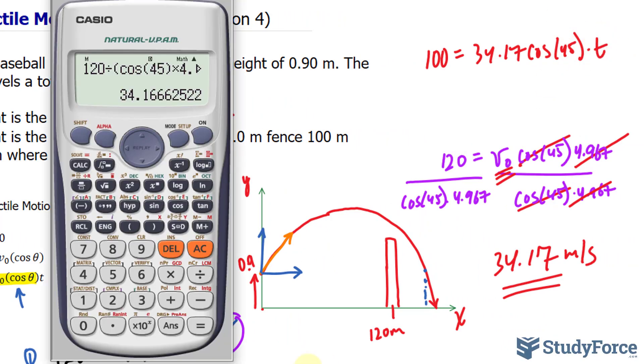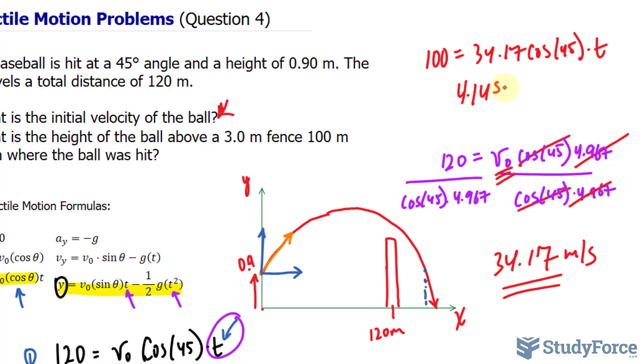Let's solve for t by dividing both sides. So, 100 divided by 34.17 times cosine 45, close, close. And that gives us a time of 4.14, 4.14 seconds to reach the 100 meter mark. That's 100 meters, and that's seconds, 4.14.